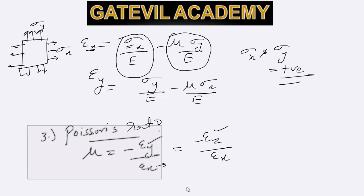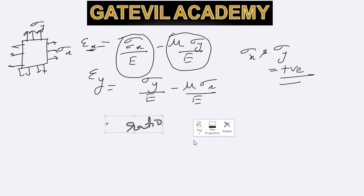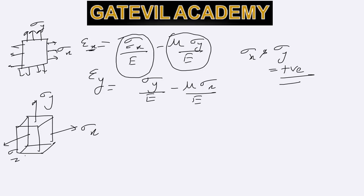Now if you see the case of three-dimensional stresses, we have sigma x in x direction, sigma y in y direction, and sigma z in z direction. So we will have epsilon x which will be equal to sigma x by e. This will be the strain in x direction due to sigma x. Then we will have mu times sigma y by e. This will be the strain in x direction due to sigma y.